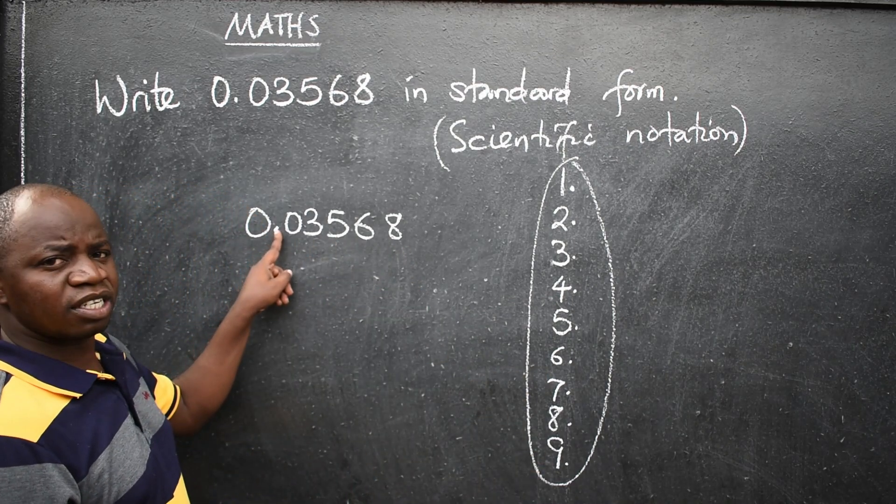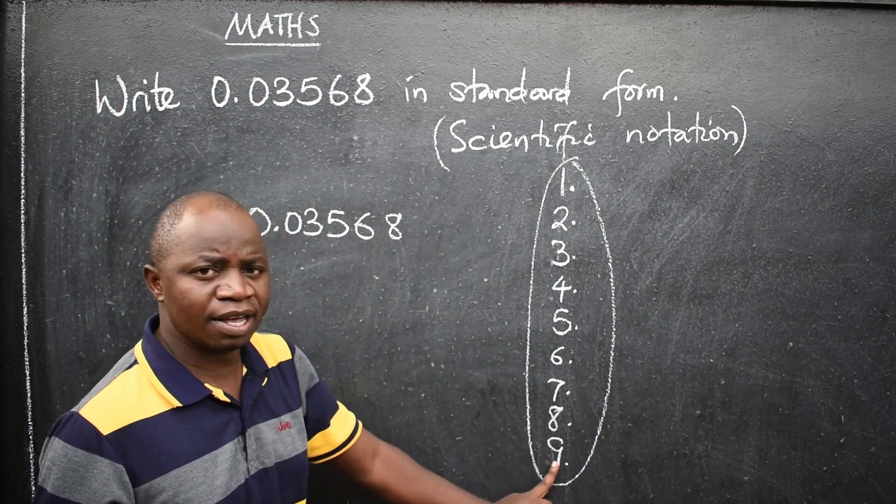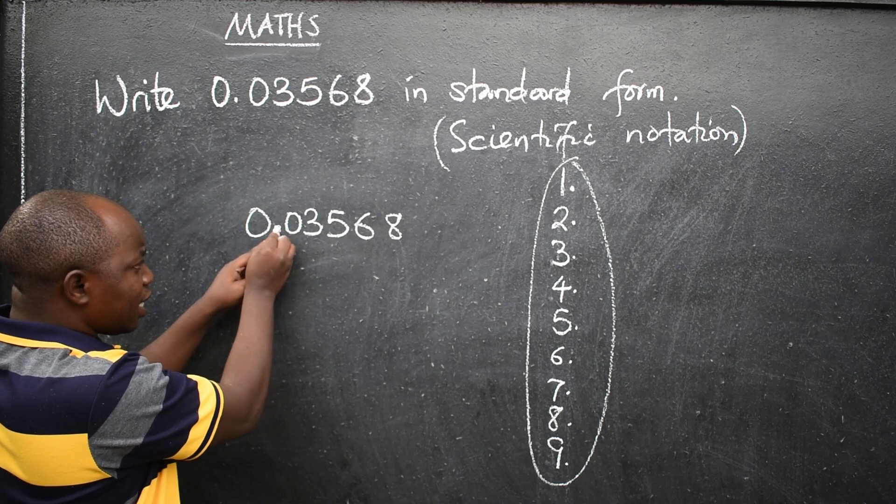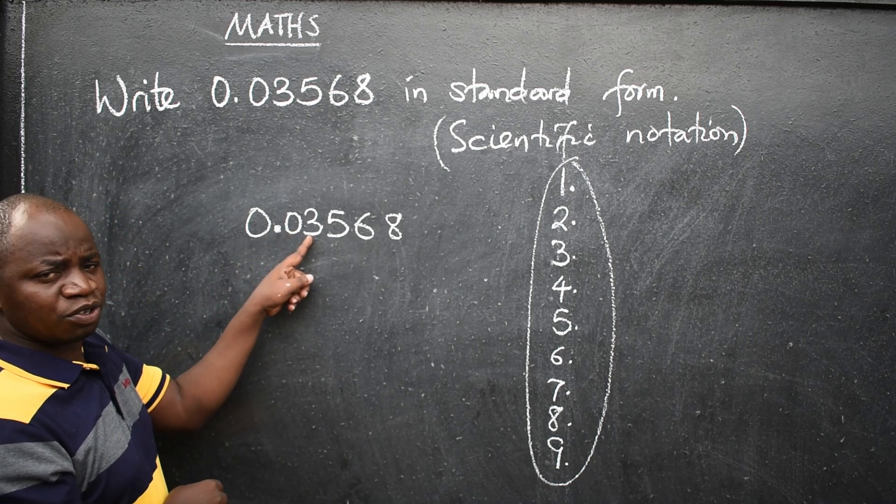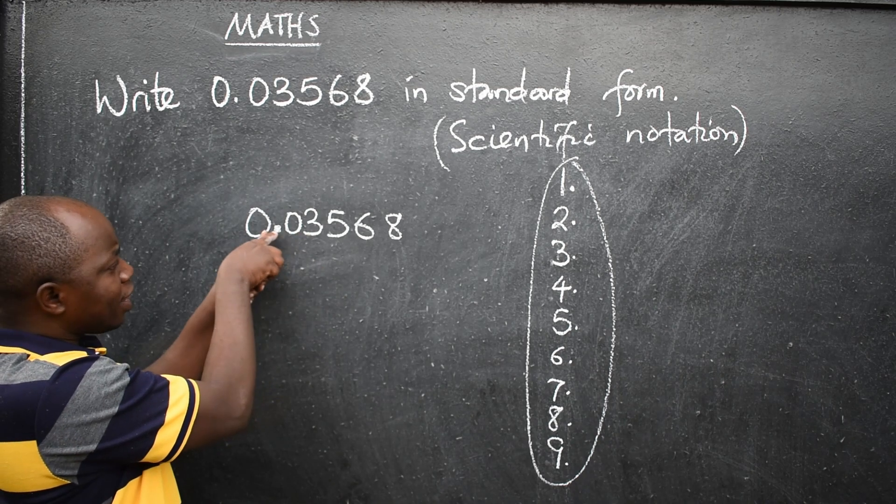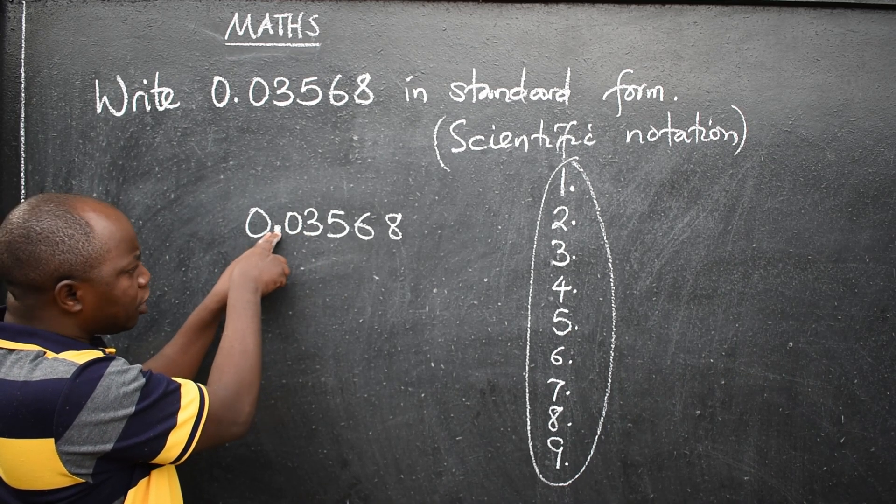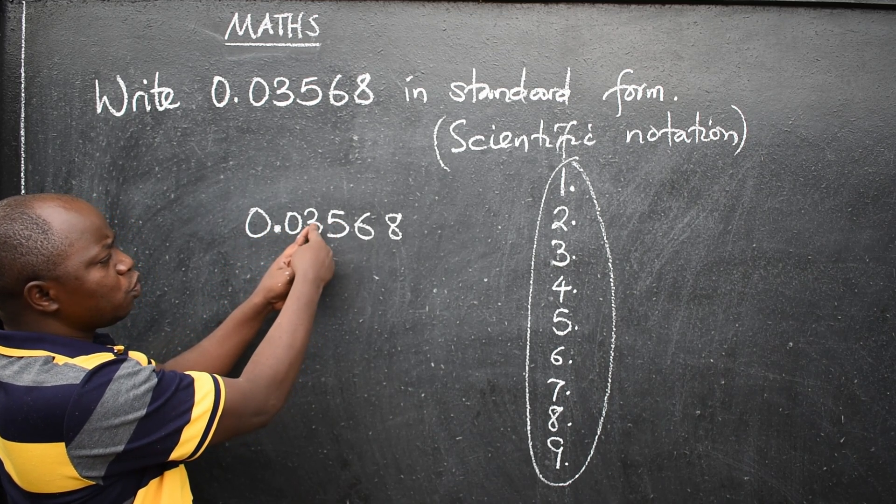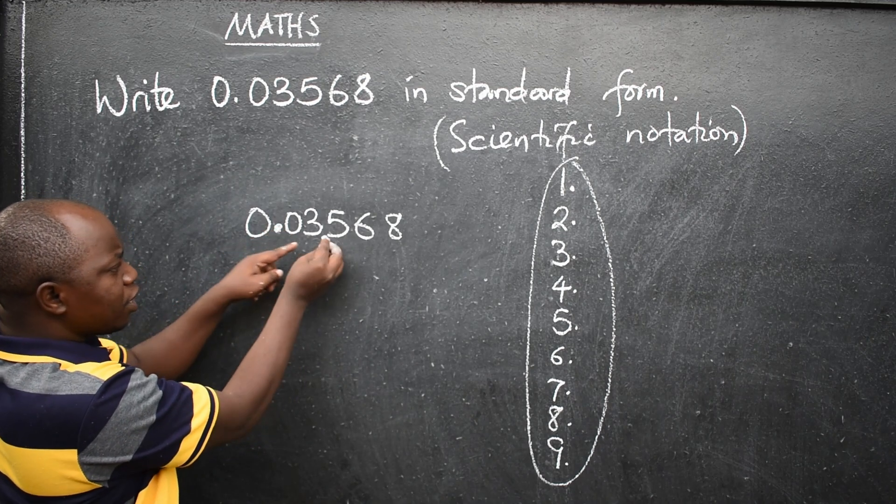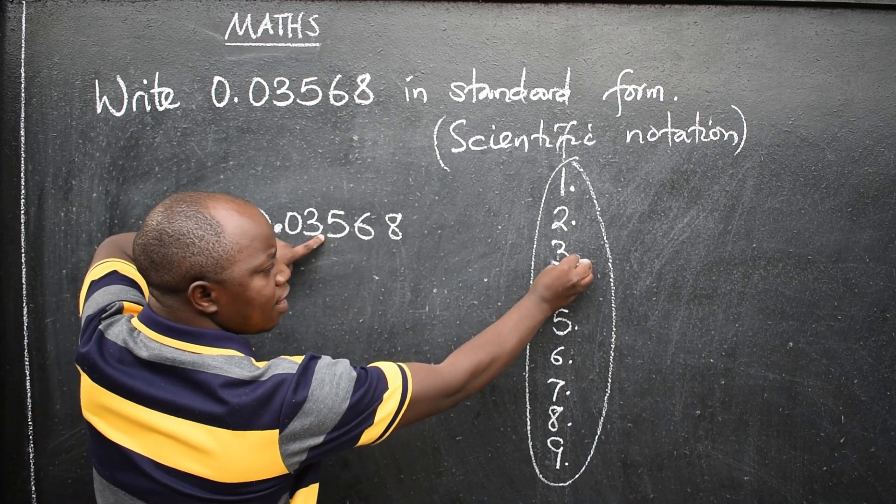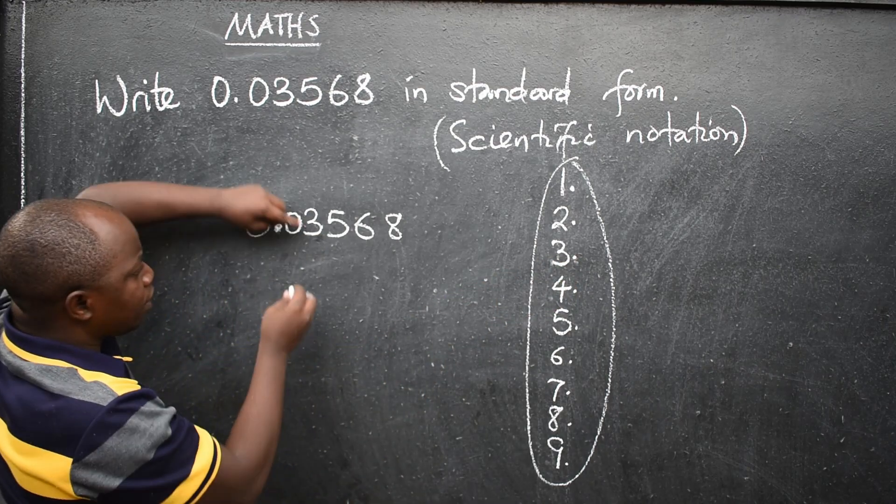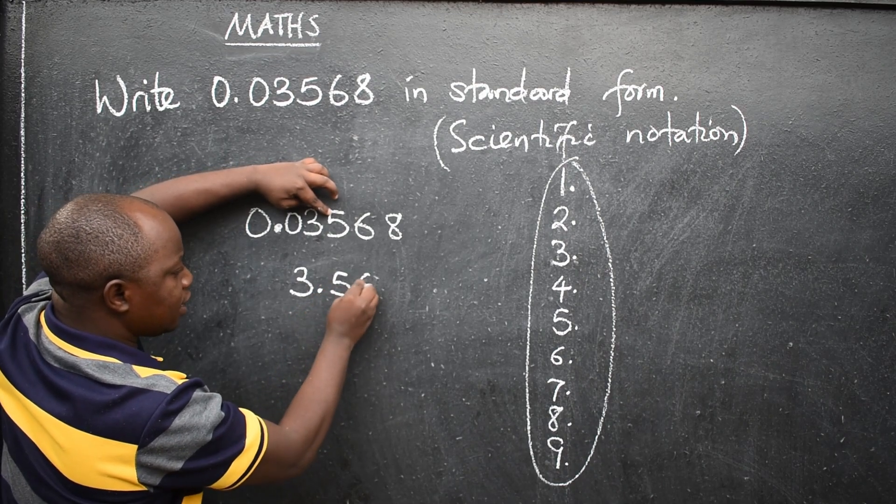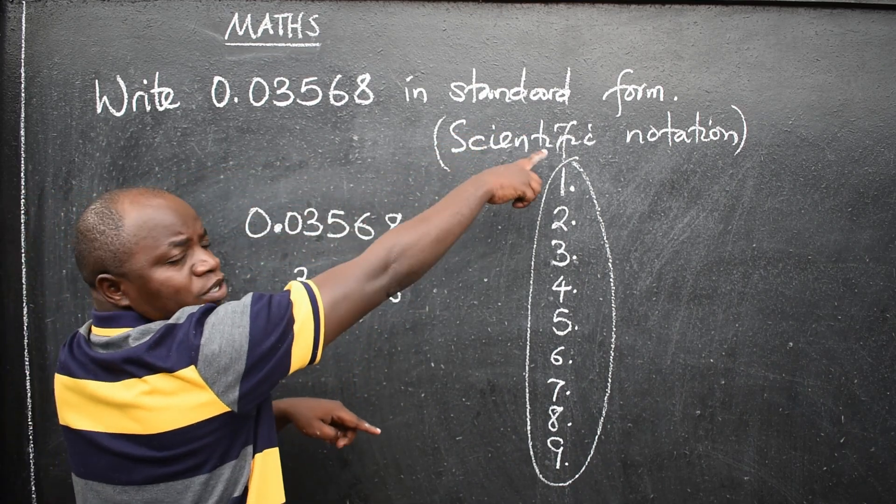Look at this, 0 point. There is no 0 point here. It means you have to shift the point from where it is here to where the first natural number is. So this point must be shifted from where it is to between the first two natural numbers. It will shift from here to here, so that it becomes 3 point. So it will now be 3.568 in standard form or scientific notation.